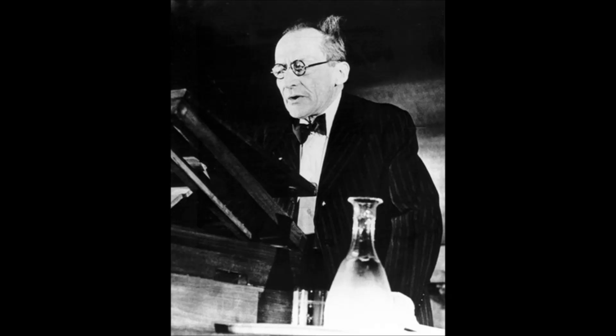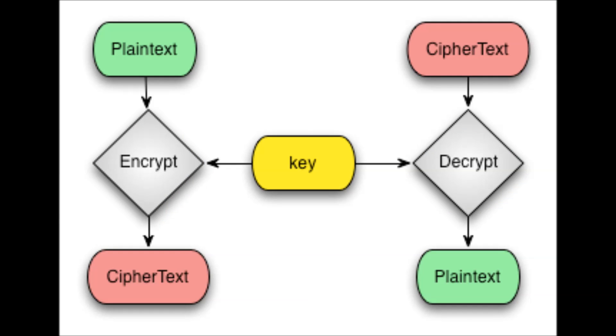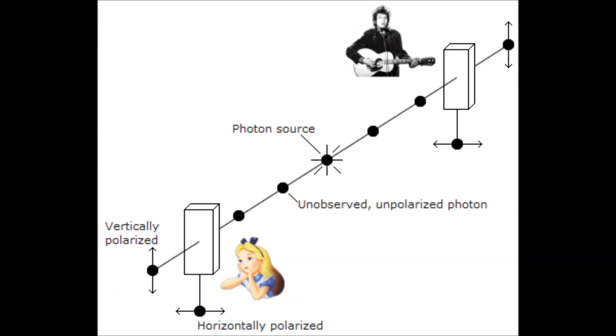In a 1982 issue of the International Journal of Theoretical Physics, Richard Feynman talks about how the true physical world is explained by quantum mechanics, and to imitate it, we need computers that work using the same laws. Two years after Feynman's thoughts, Bennett and Brassard proposed a way to surpass the issues with conventional cryptosystems by using the uncertainty principle of quantum physics. This protocol works by transmitting information encoded in non-orthogonal quantum states, and by doing so, any eavesdropping will alter the information and alarm the legitimate users.